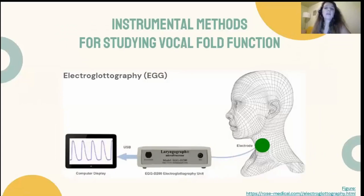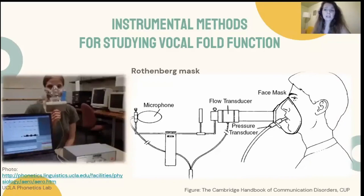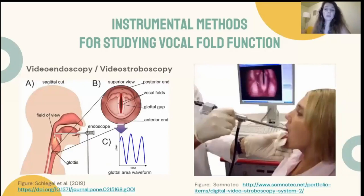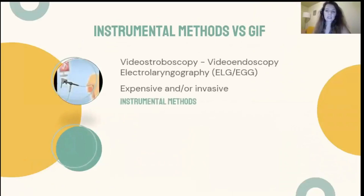Vocal function can be examined using various instrumental methods. Electrolaryngography or electroglottography is a non-invasive technique commonly used for vocal fold vibration monitoring and voice quality assessment. Another instrumental technique involves the Rothenberg mask, which utilizes inverse filtering of the oral flow signal. It has been used in combination with the electroglottograph to describe the vocal functioning of deaf speakers. Vocal fold movement can also be observed via laryngeal endoscopic imaging such as video endoscopy and video stroboscopy, involving insertion of a long tube in the speaker's throat. Although these instrumental methods are recommended, they can be expensive and/or invasive and the use of some has been characterized as highly subjective.